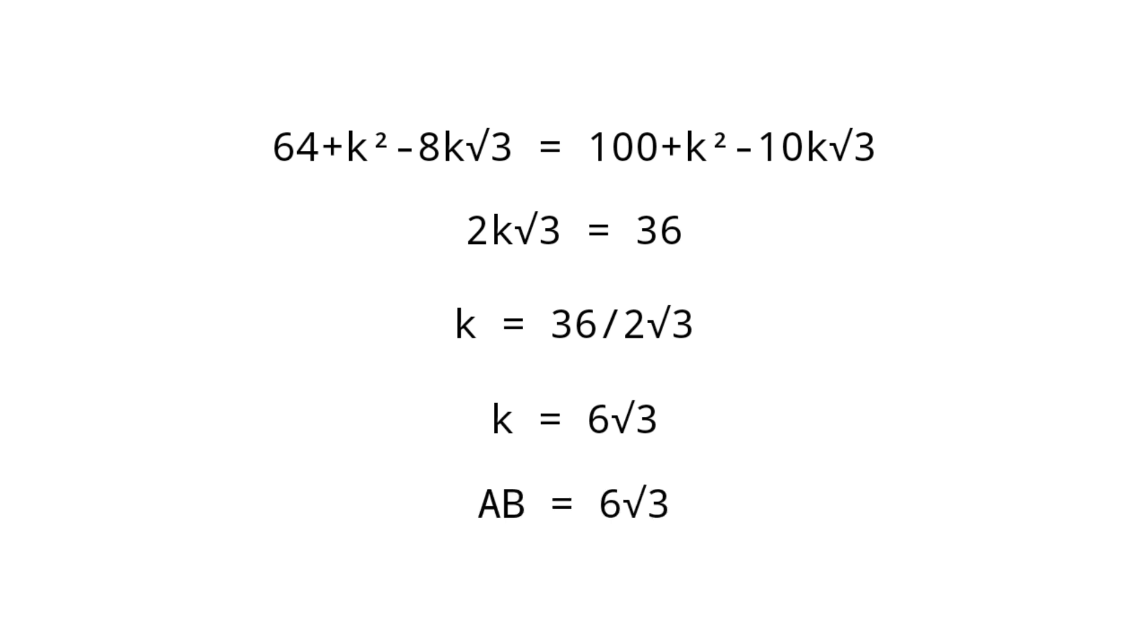From the two equations we get 64 plus K squared minus 8K root 3 equals 100 plus K squared minus 10K root 3. That is, 2K root 3 equals 36, and K equals 36 by 2 root 3. So K equals 6 root 3. Finally, we get K equals AB equals 6 root 3.